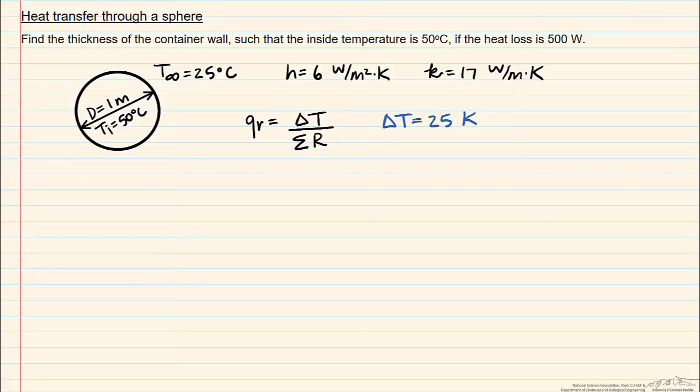So we have two thermal resistances. We have a conductive resistance, and for a sphere that's going to be 1 over 4 pi k, where k is the thermal conductivity, times 1 over R1 minus 1 over R2. Our convective heat transfer resistance is going to be equal to 1 over H, our convective heat transfer coefficient, times 4 pi, and now here the outside R2 squared.